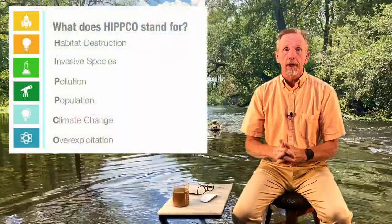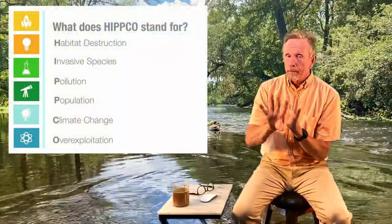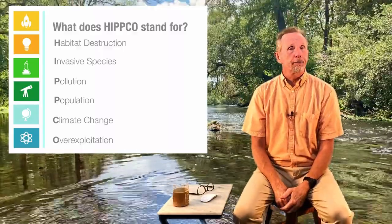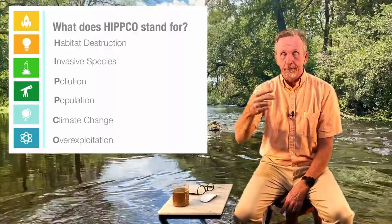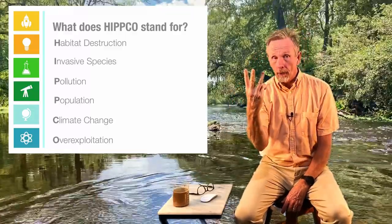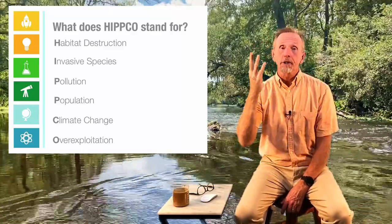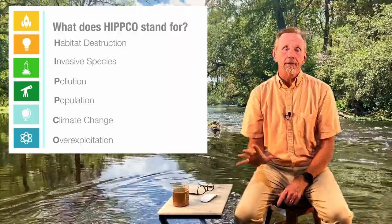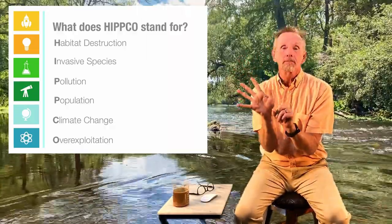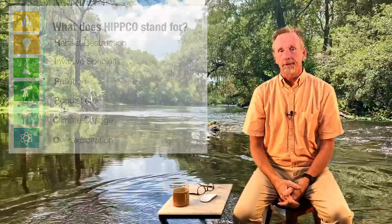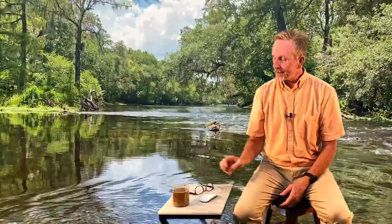Remember HIPCO — this is how humans are pushing extinctions of many different animals: habitat loss, invasive species, population growth along with resource use, and along with population comes increased pollution, climate change, and over-exploitation of certain animals leading to extinction. That is it for section three. Take care, and we will see you next time when we look at what it takes to sustain some of these wild species and their ecosystem services.